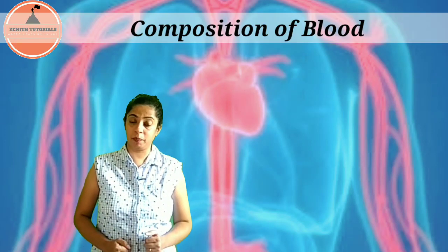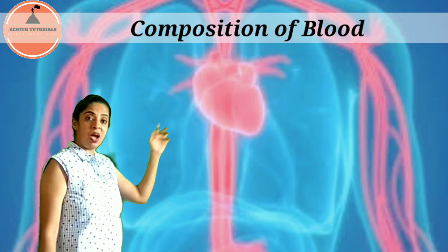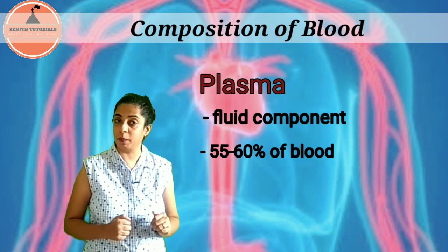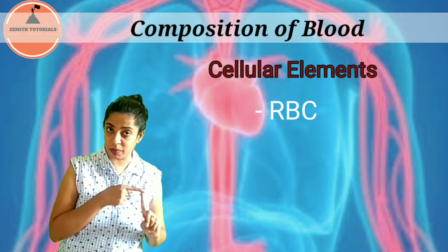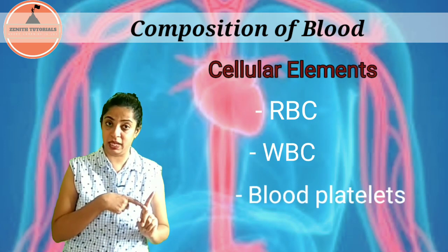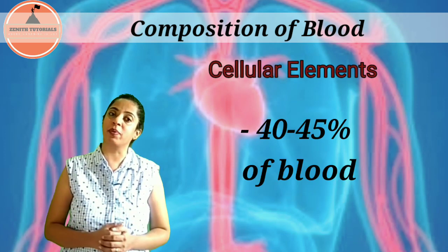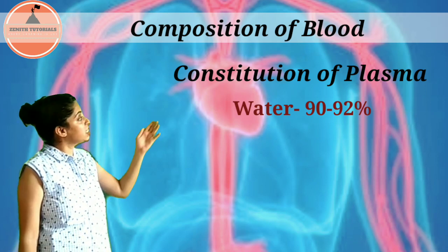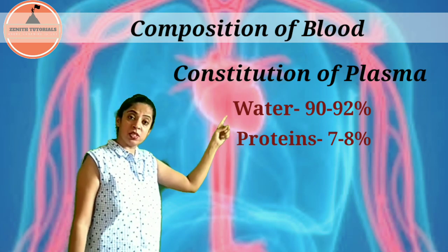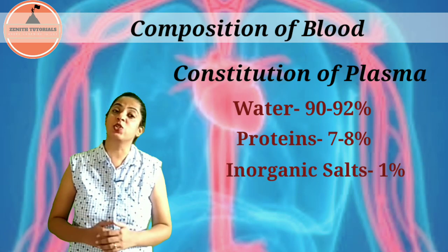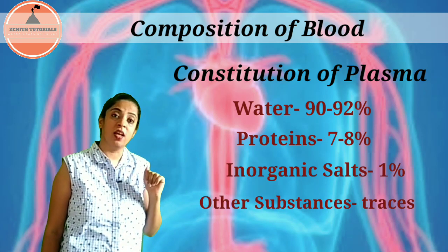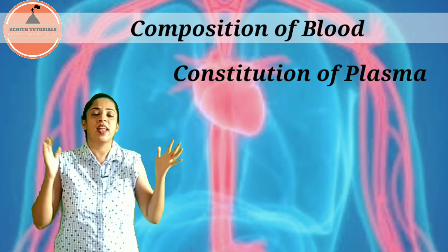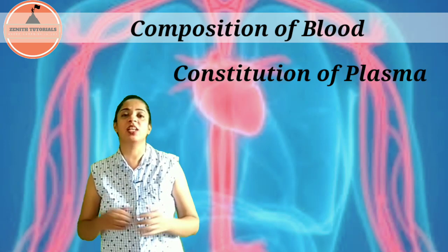Now let us study the composition of blood. It can be divided into two parts: plasma and cellular components. Plasma is the fluid constituent, constituting 55 to 60 percent of blood. Plasma contains 90 to 92 percent water, 7 to 8 percent proteins, 1 percent organic salts like sodium chloride and sodium bicarbonate, and traces of other substances like glucose, amino acids, fibrinogen, and hormones. Plasma from which the protein fibrinogen has been removed is termed serum.